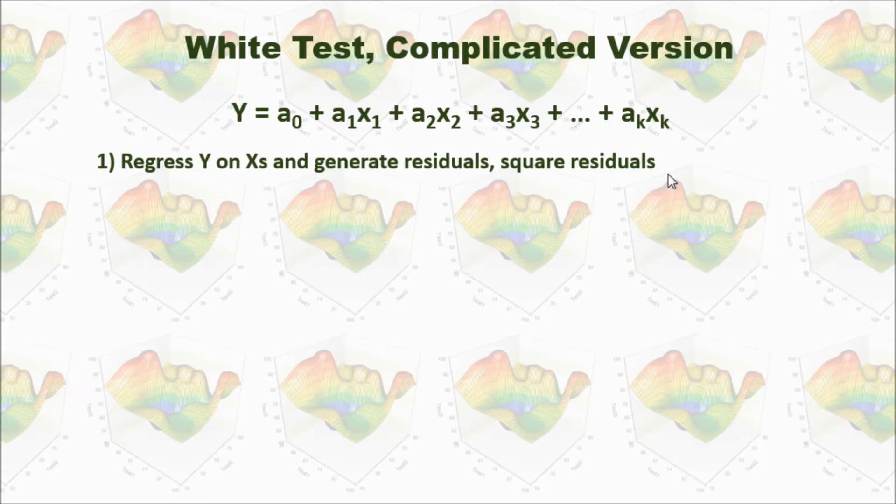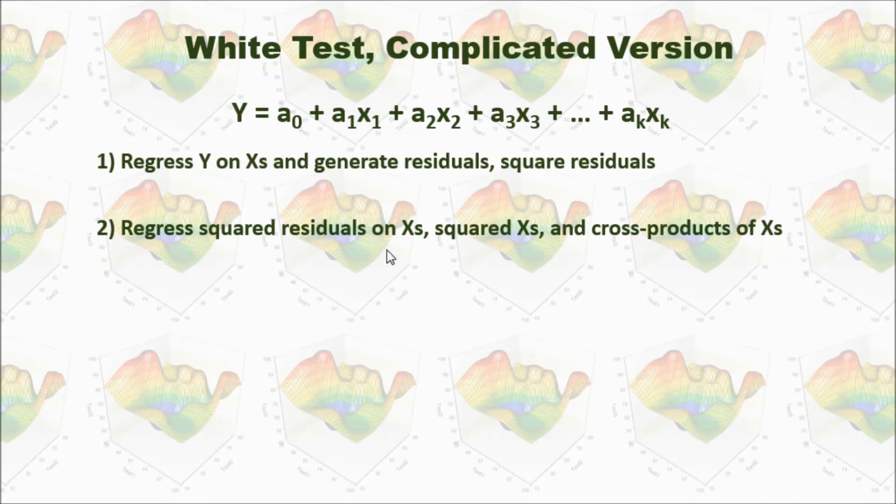And then we regress squared residuals on Xs, squared Xs, and cross products of Xs. So the difference between Breusch-Pagan test and White test is we have this squared X and cross products of X for White test, but not the Breusch-Pagan test.